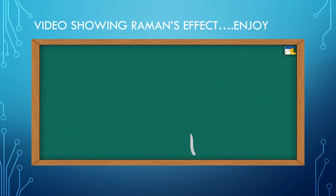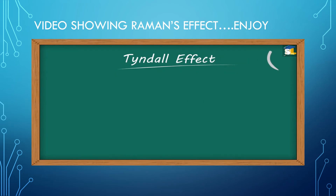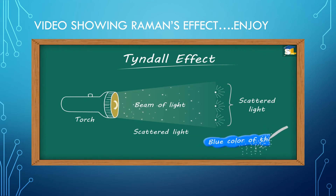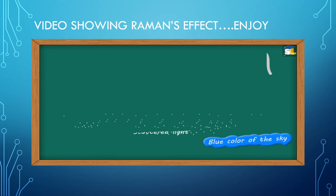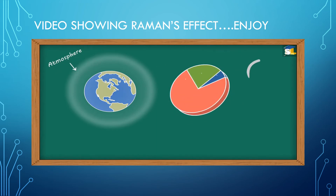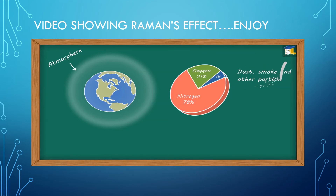To understand this, first let us study about the Tyndall effect. The Tyndall effect is a phenomenon in which a beam of light scatters on striking the particles present in its path. This scattering of light is responsible for the blue color of the sky. Our atmosphere primarily consists of oxygen and nitrogen particles, along with dust, smoke, and other particles in comparatively smaller proportions.